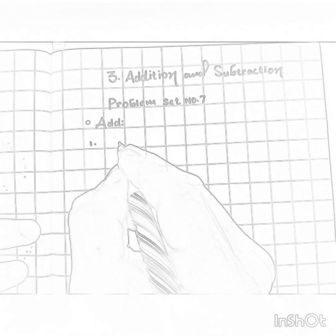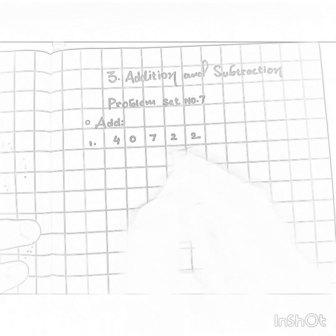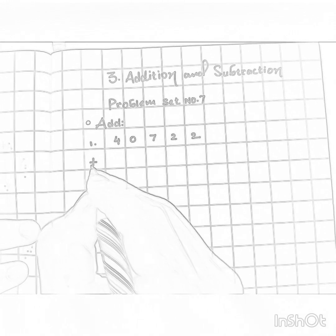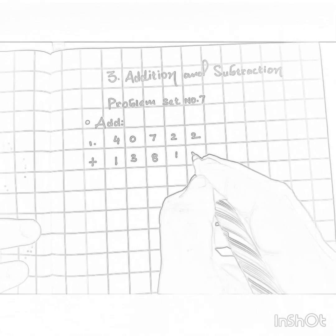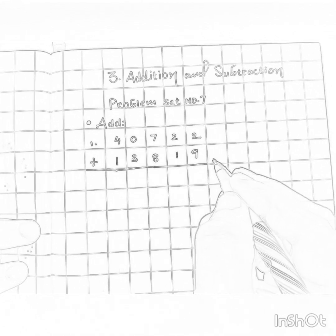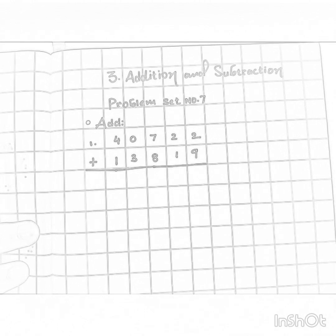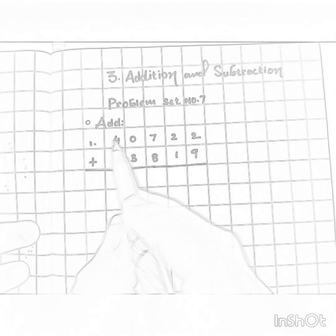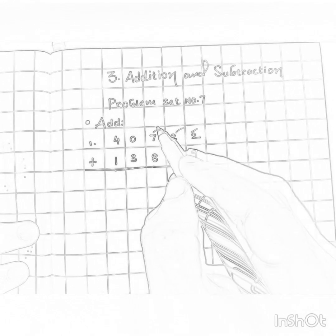The first example is: add 40722 plus 13819. So that is forty thousand seven hundred and twenty two plus thirteen thousand eight hundred and nineteen. Now always remember how you are going to write this — first count the digits: ones, tens, hundreds, thousands, ten thousands — a five digit number.